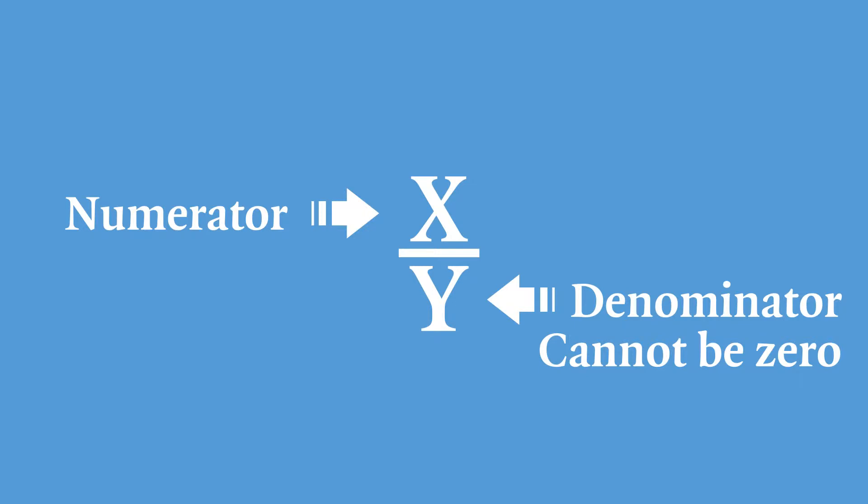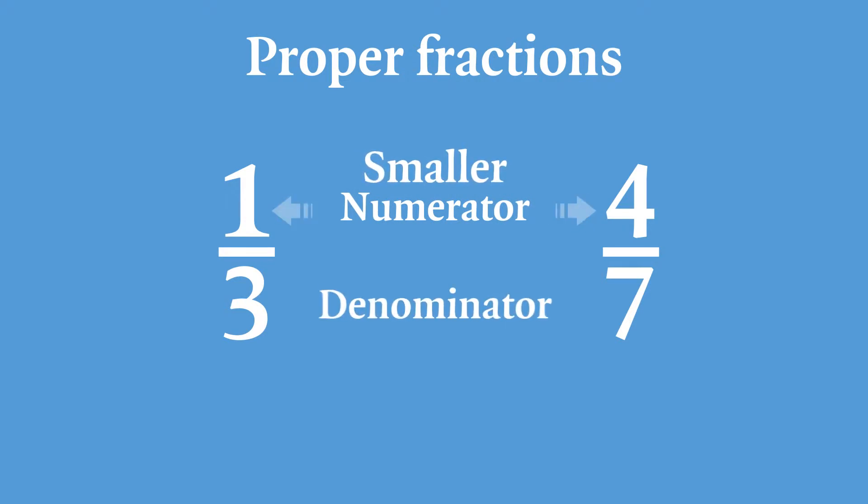Let's look at the two kinds of fractions you will encounter. We call these proper fractions. This means that the numerator, in this case the 1 and the 4, is smaller than the denominator, in this case the 3 and the 7.